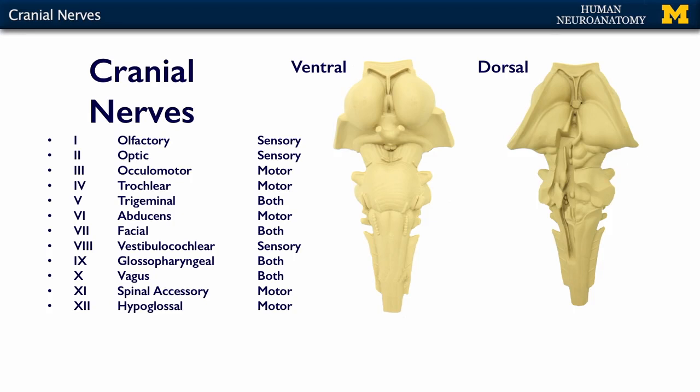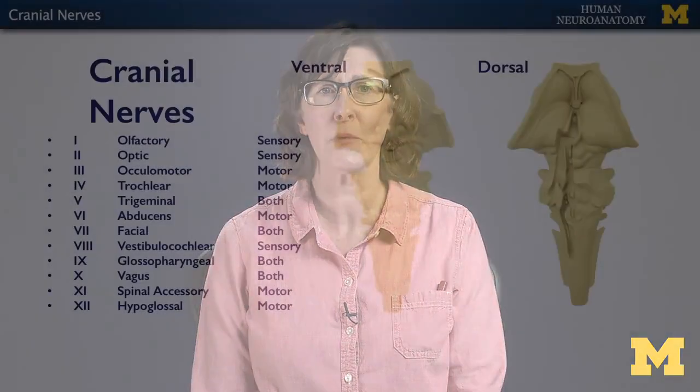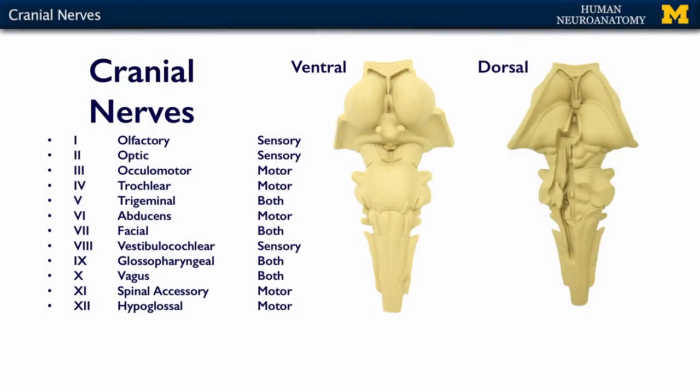The glossopharyngeal nerve is mixed — it has an autonomic component, a sensory component, and a motor component. The vagus is also mixed; it has a sensory component and a large parasympathetic component, and we'll talk about that in a presentation all of its own. The spinal accessory nerve is motor to two specific muscles: the trapezius and the sternocleidomastoid. And the hypoglossal nerve, the last one, is also only motor, innervating the intrinsic and extrinsic muscles of the tongue.